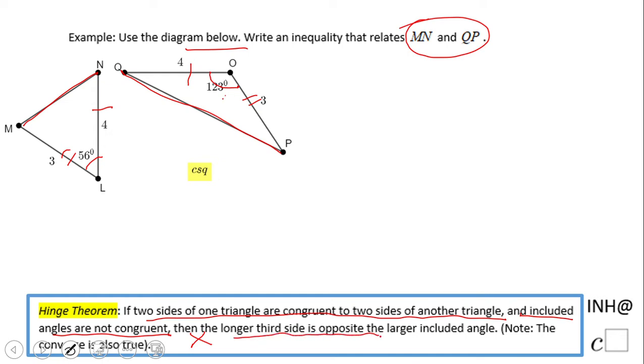Then the longer third side is opposite to the largest included angle. So we look in here, this is the larger one, and the opposite is QP. That should be larger than the opposite of this 56, which is MN. That's it.